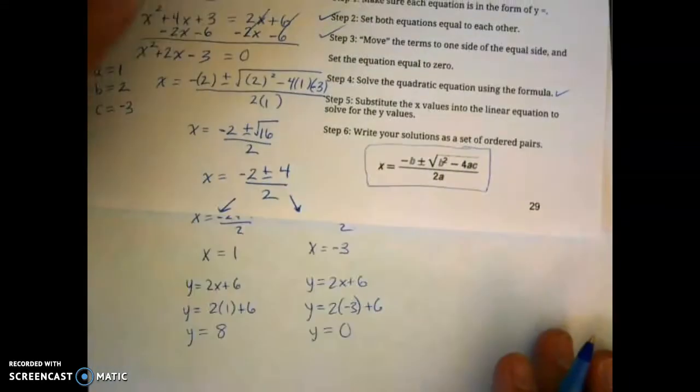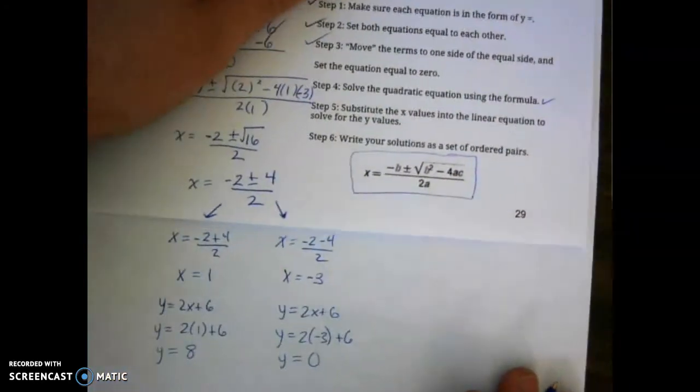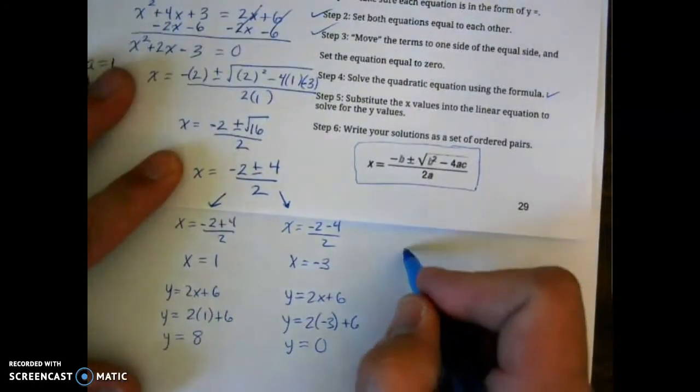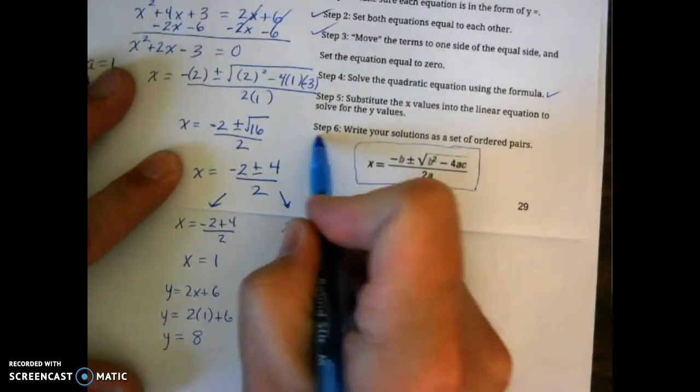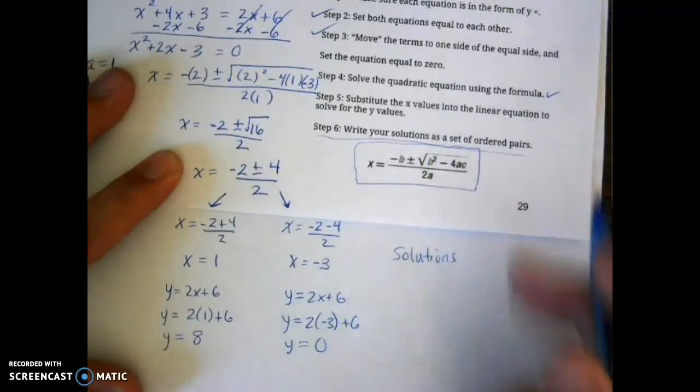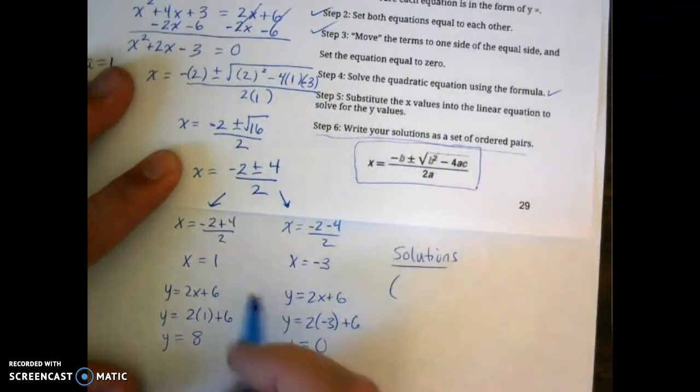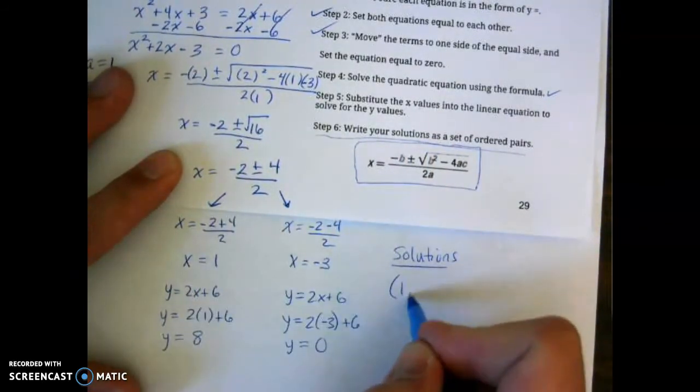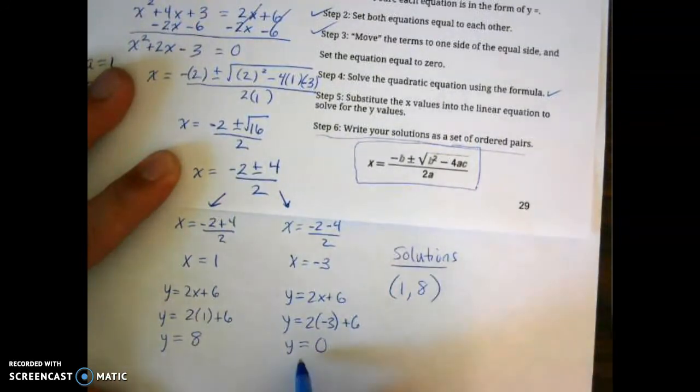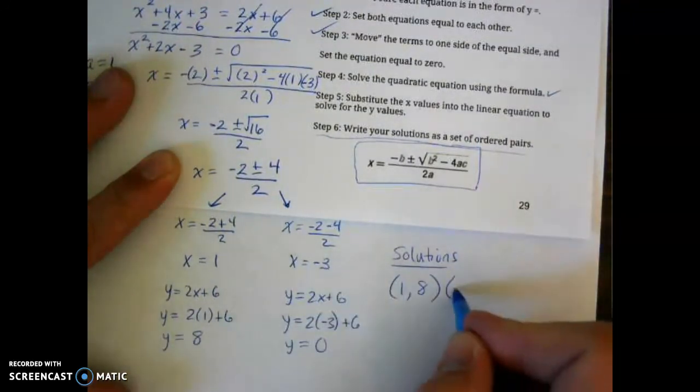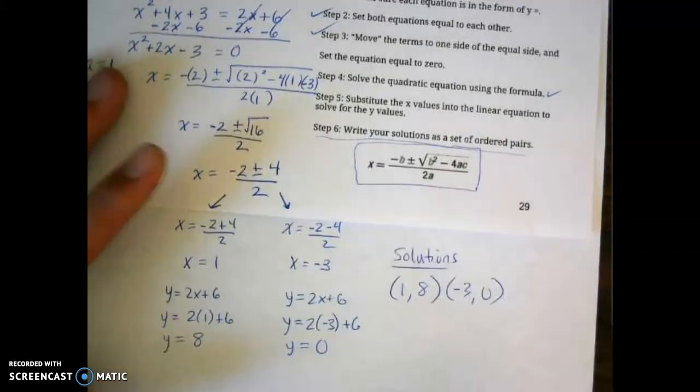So at this point, I have my x value, and I have my y value, so I can write my solutions. Which is step 6 here. Write your solutions as a set of ordered pairs. So my solutions here are x value 1, y value 8, so the point 1, 8, and the point negative 3, 0.